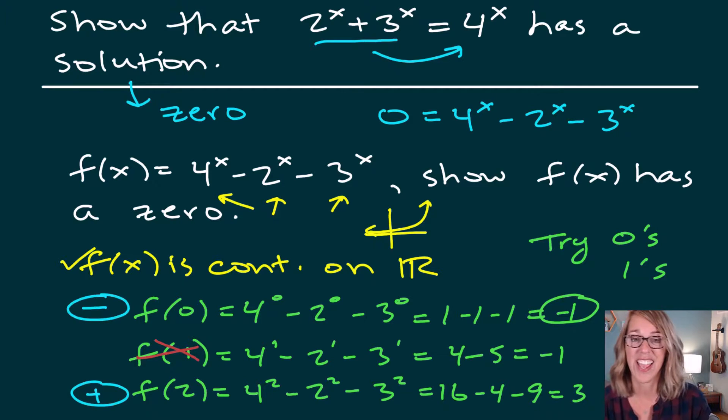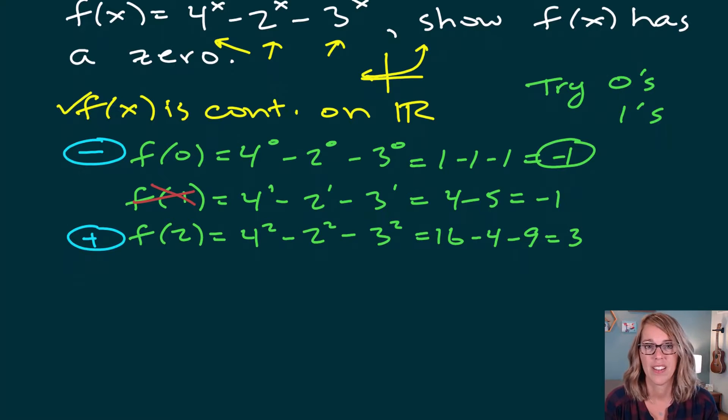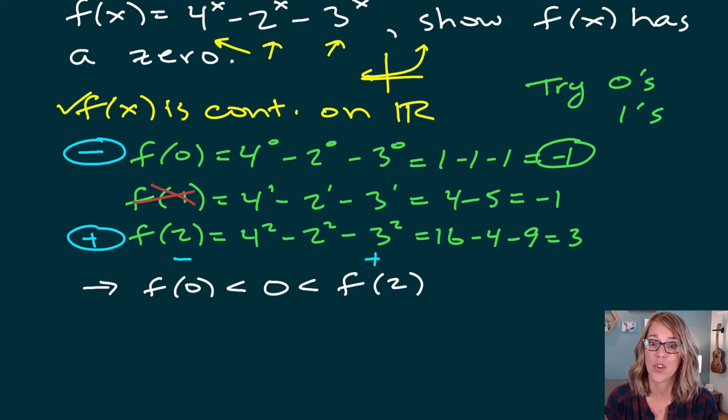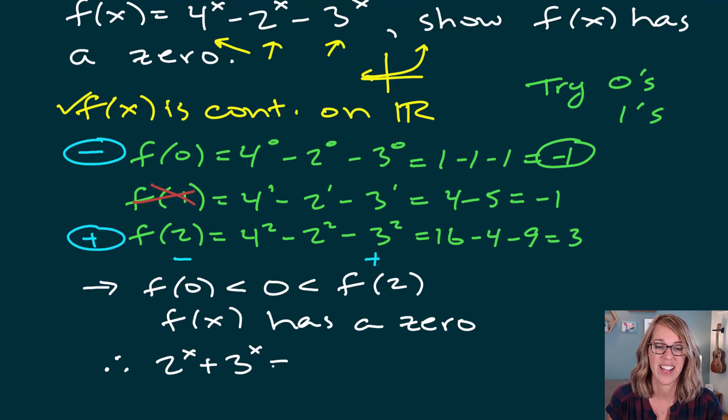I have a continuous function, and I've got a point where my y value is negative and a point where my y value is positive. It has to cross the x-axis somewhere. Let's put our conclusion in. So I'm going to write that f of zero is less than zero is less than f of two. We found a negative value and a positive value. So we knew we had to cross through zero. So I know that f of x has a zero. But this really isn't my conclusion. My whole goal was to show that this function, so therefore, two to the x plus three to the x equals four to the x has a solution.